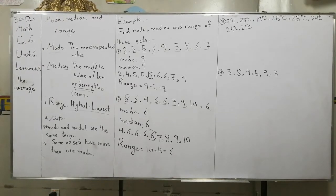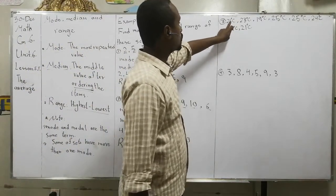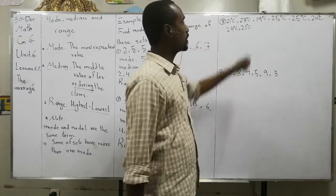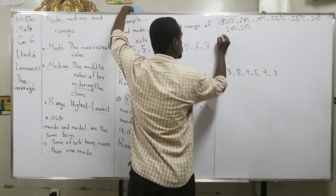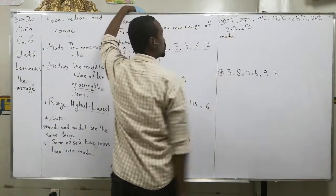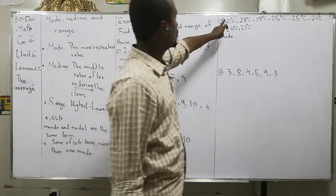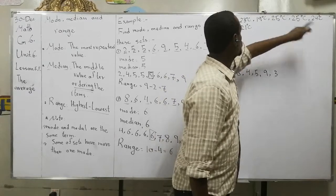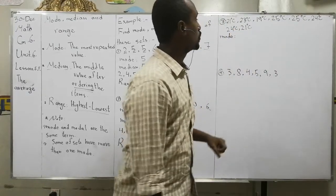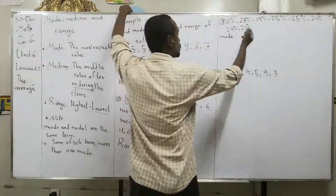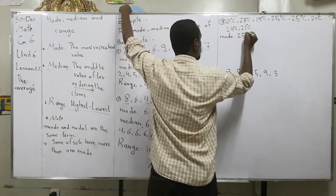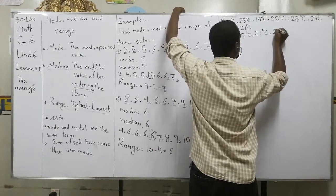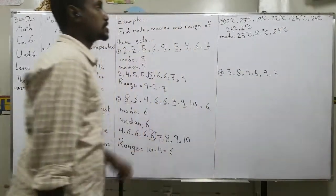Let's go to question number three — here we have temperature data: 21, 23, 19, 25, 25, 24, 24, 24, and 21. Let's find the mode first. Twenty-one appears two times, twenty-three appears once, nineteen appears once, twenty-five appears two times, twenty-four appears three times. Wait — so we also check: twenty-five two times, twenty-one two times, and twenty-four three times. The mode will be the most repeated number, which is twenty-four.